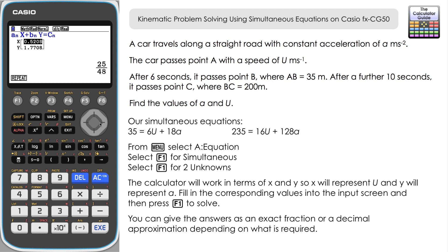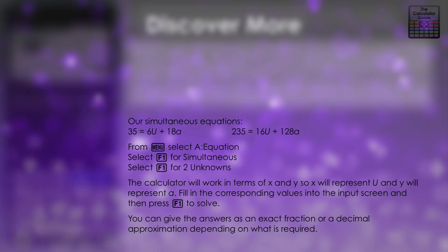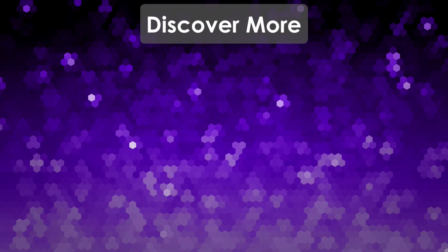And A is the Y value: 85 over 48, or 1.771 meters per second squared to three decimal places. So there we go — we use the kinematic equations of motion to produce two linear simultaneous equations, and then get the calculator to solve them. Don't forget to like and subscribe for future videos. Thank you very much for watching and I'll see you next time on the calculator guide.